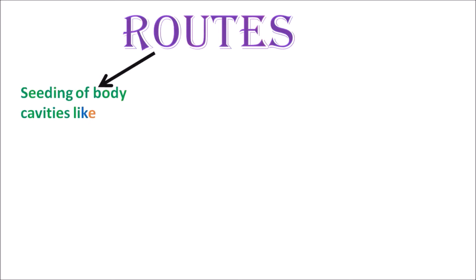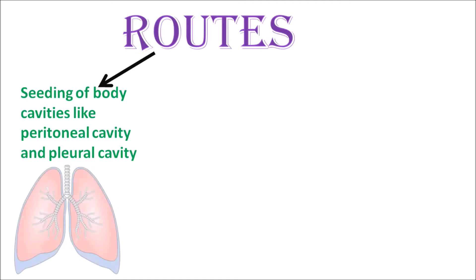Number one: it can spread by seeding of body cavities like the peritoneal cavity and pleural cavity. The pleural cavity and the peritoneal cavity are basically the empty cavities situated in the body in which the organs lie, so the cancer cells can very easily spread into them. A very good example of seeding of the pleural cavity would be lung carcinoma, which can very easily spread from the lungs into the pleural cavity which surrounds the lungs.